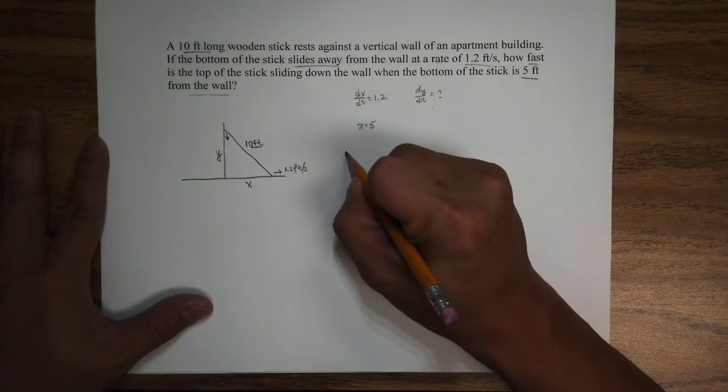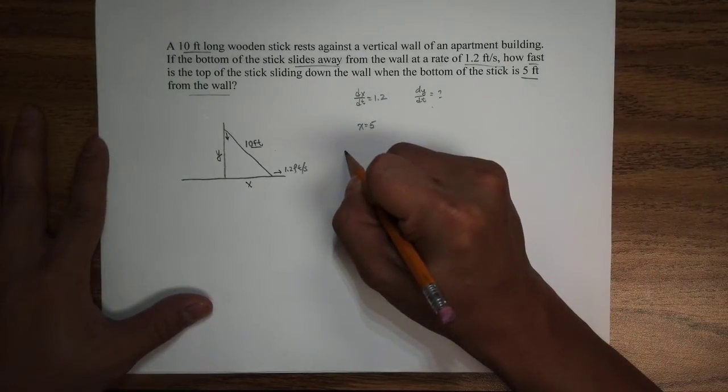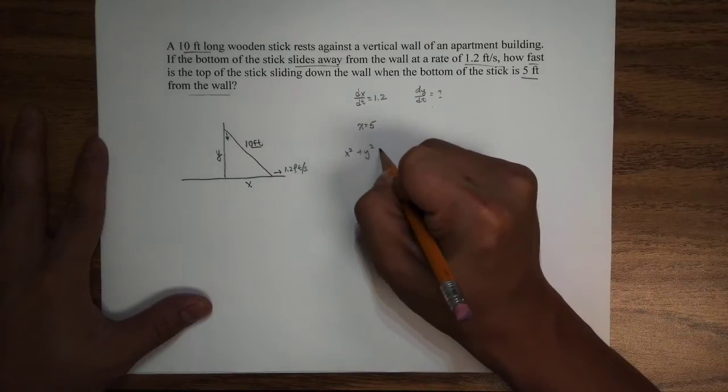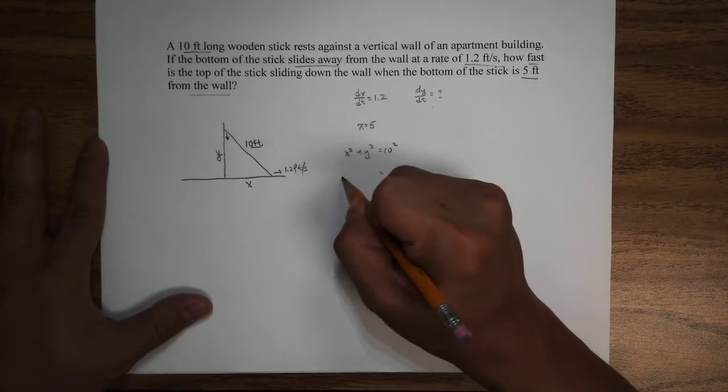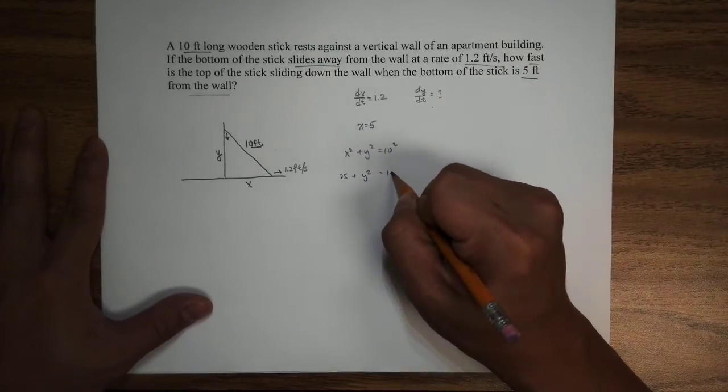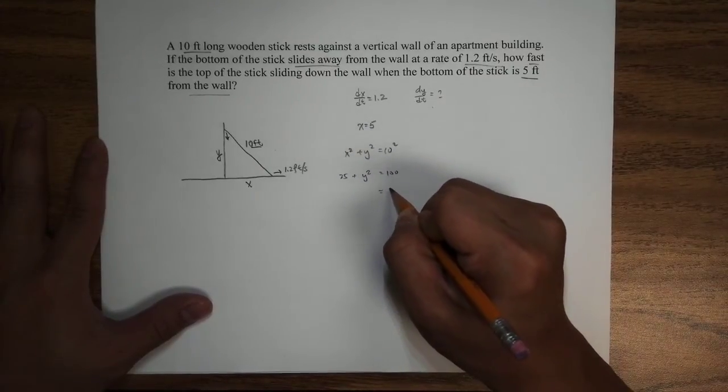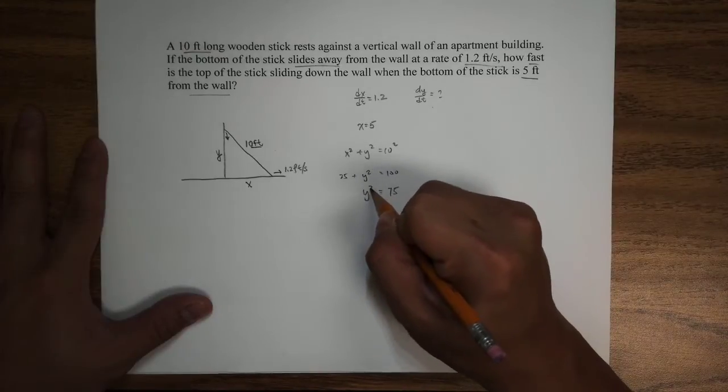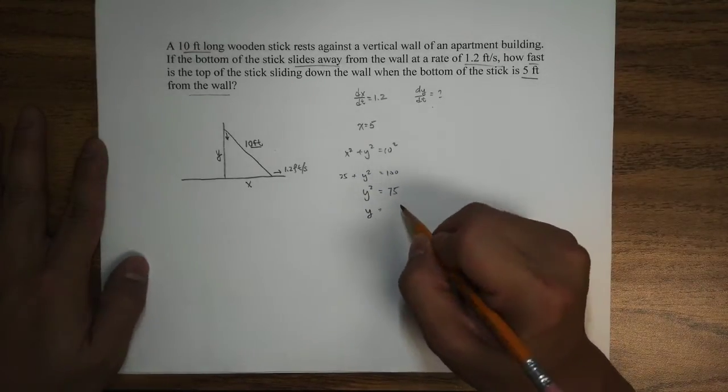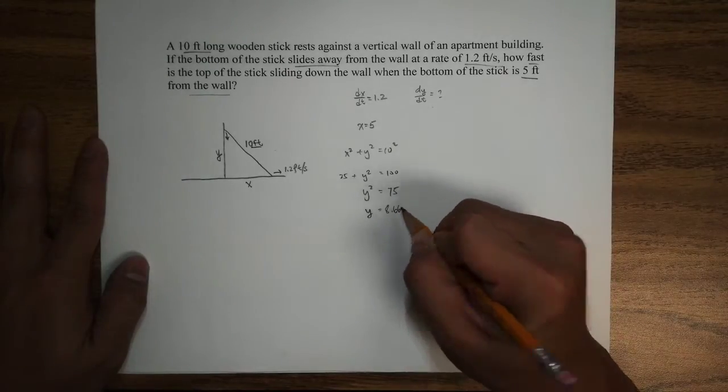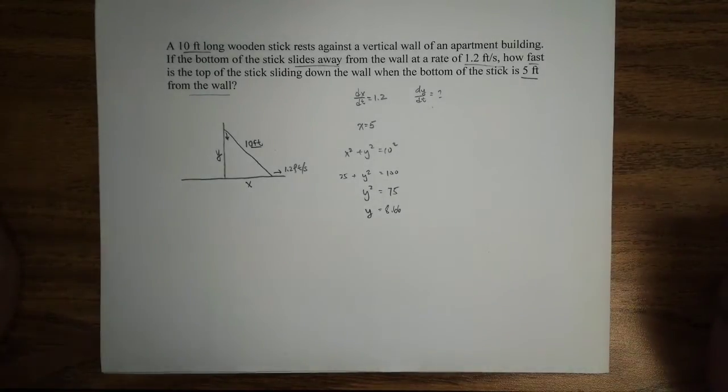So we can find Y by saying X squared plus Y squared is equal to 10 squared. And we have X here, so 25, Y squared, 100. So we have 75 is equal to Y squared. Y is equal to, let me see, 8.66. And I'm going to round it up to 8.66.